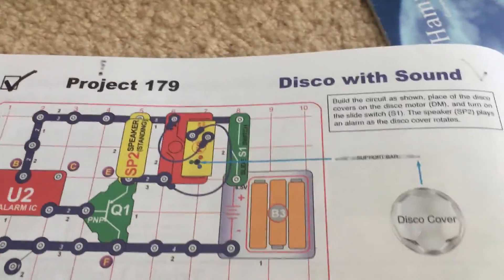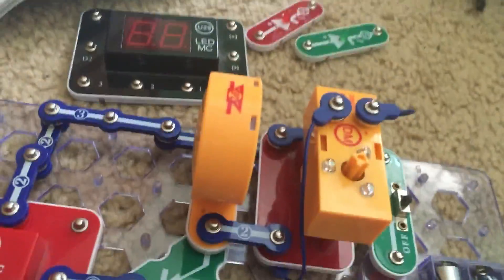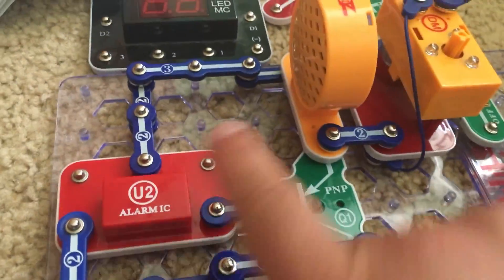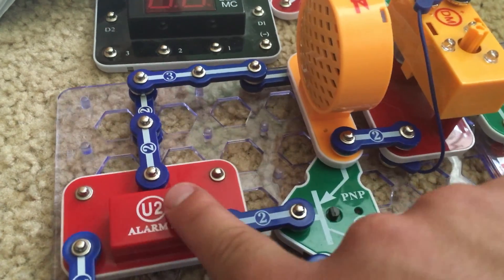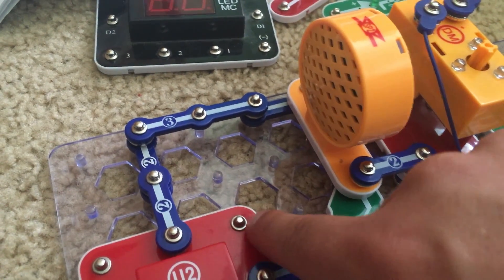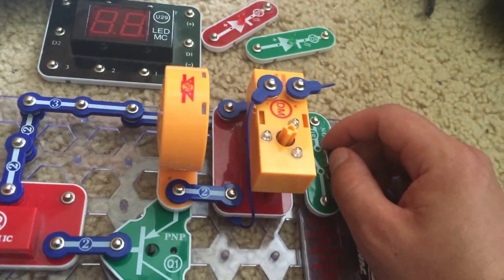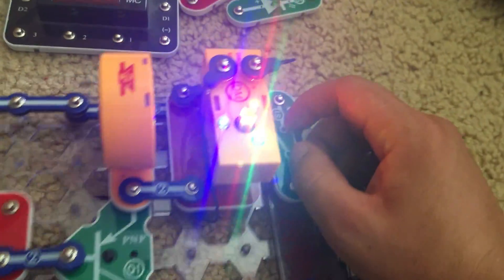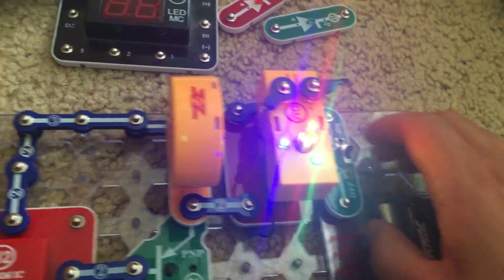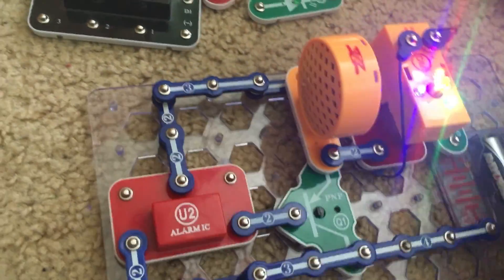Project 179 is called disco with sound. We are using the disco motor but we also have the U2 module and the speaker. We are going to turn on the slide switch and let's see what happens. The disco motor spins and lights up but also a siren sound plays.